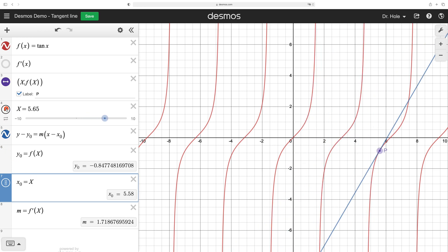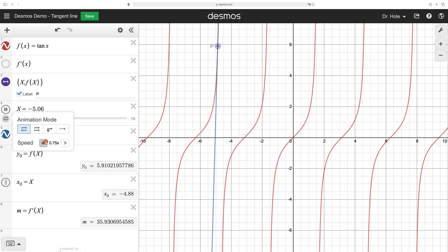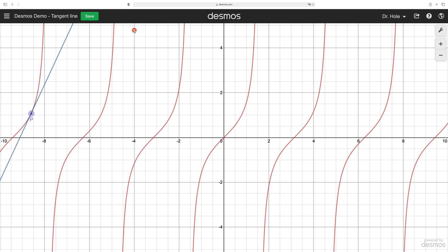Hit play on the x. Let's slow that down. There you go. And then we have P moving about and the tangent line following P. Fantastic.